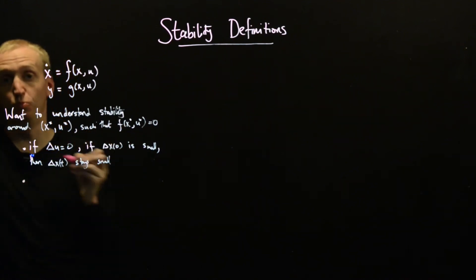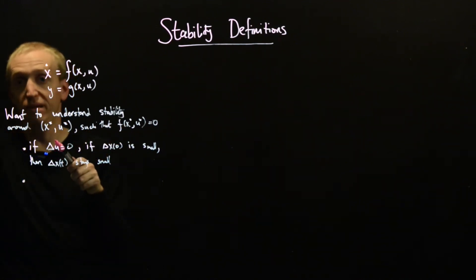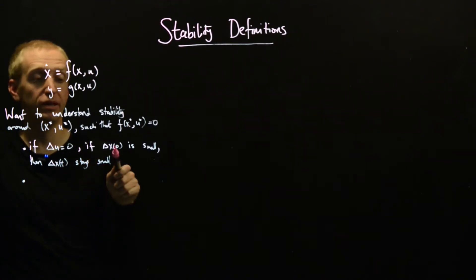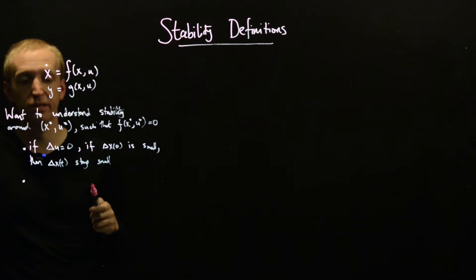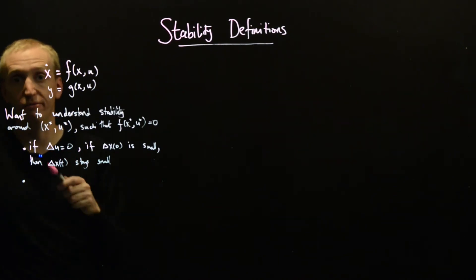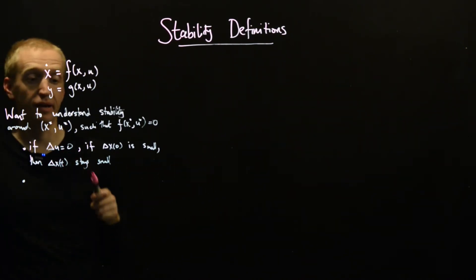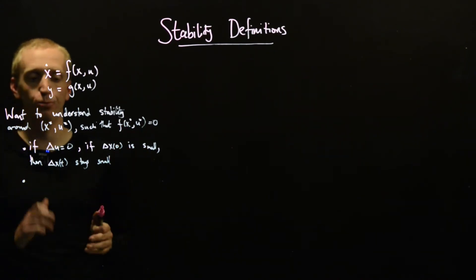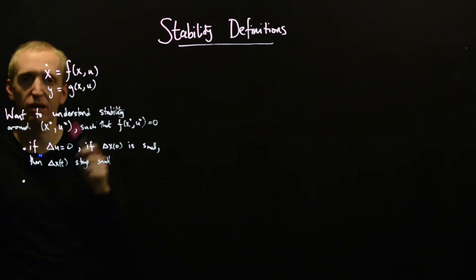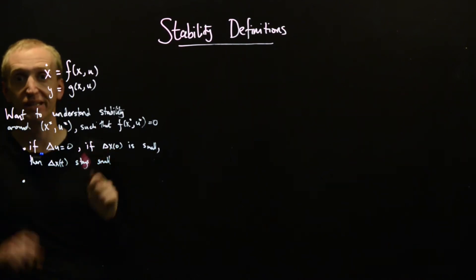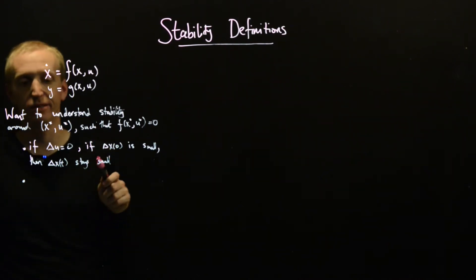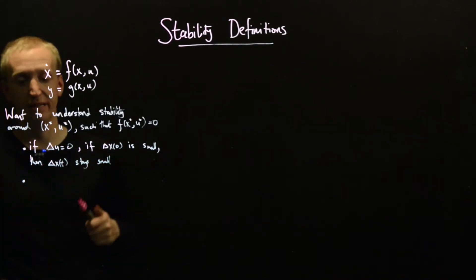Then delta x of t stays small. So informally, this is just saying that if we take an equilibrium point of our system, if we don't do anything to keep us in that equilibrium point, and we just perturb ourselves slightly away from that equilibrium point, will our state variable stay close? And everything's very informal here. Obviously, we need to pin down really what we mean by close here. So this might be our first desirable notion for understanding stability of the equilibrium point, and we could say that if we do stay close, then the equilibrium point is stable.